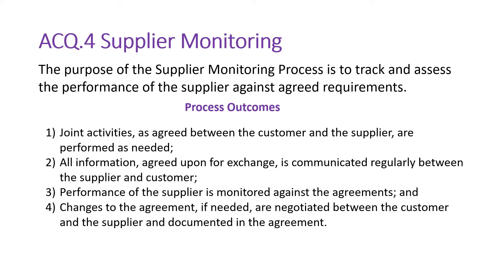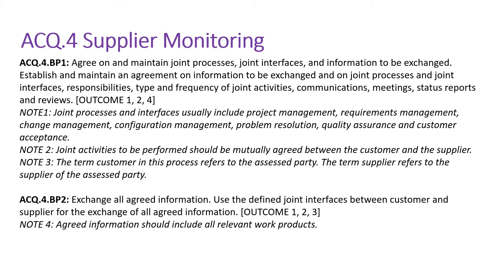Initially you will have a contract document — the agreement between the supplier and the customer or client. If you have a contract document and any change in the scope of work, then you need to get formal approval from the customer. Best Practice 1 talks about agreeing on and maintaining joint processes, joint interfaces, and information to be exchanged.